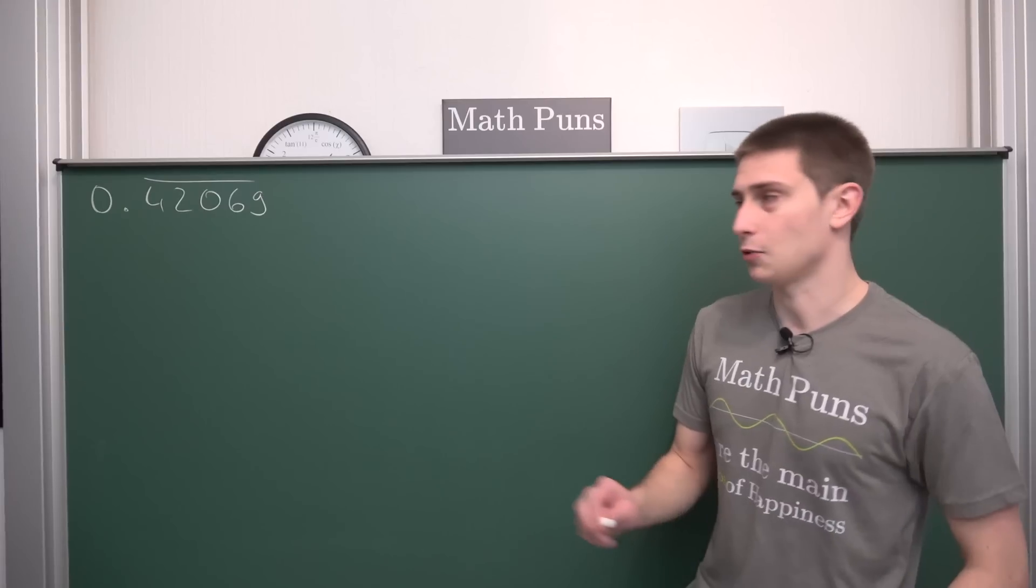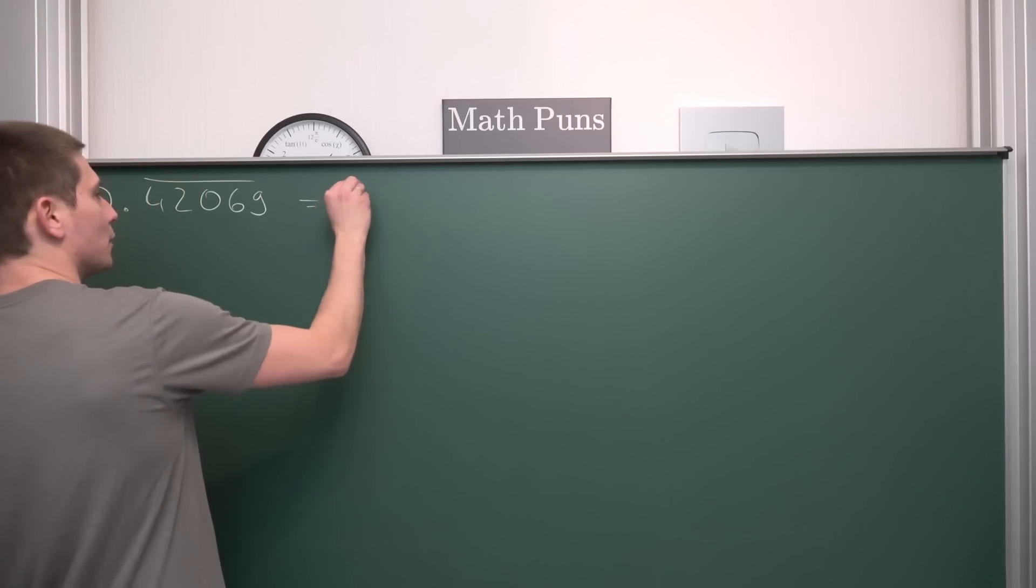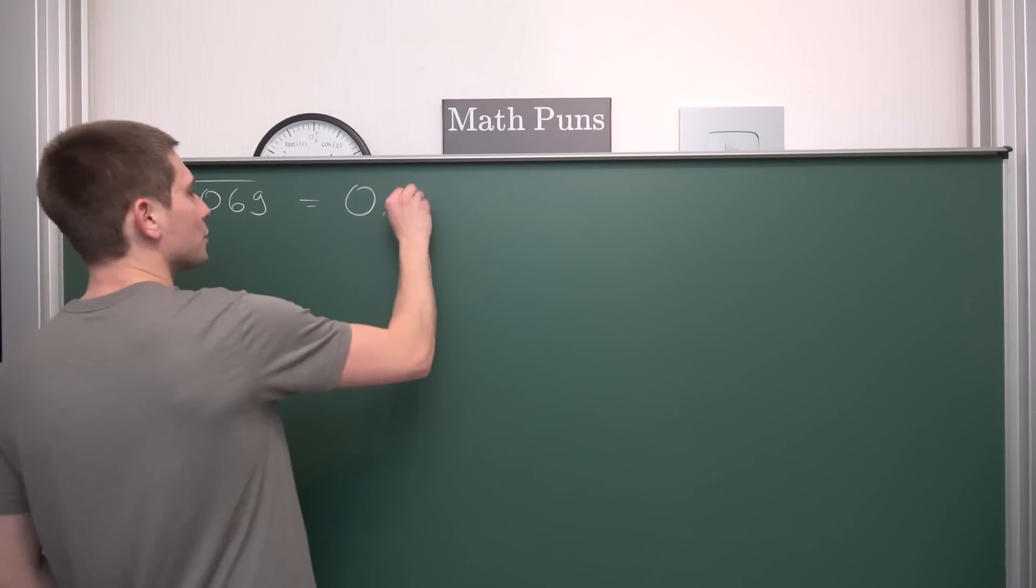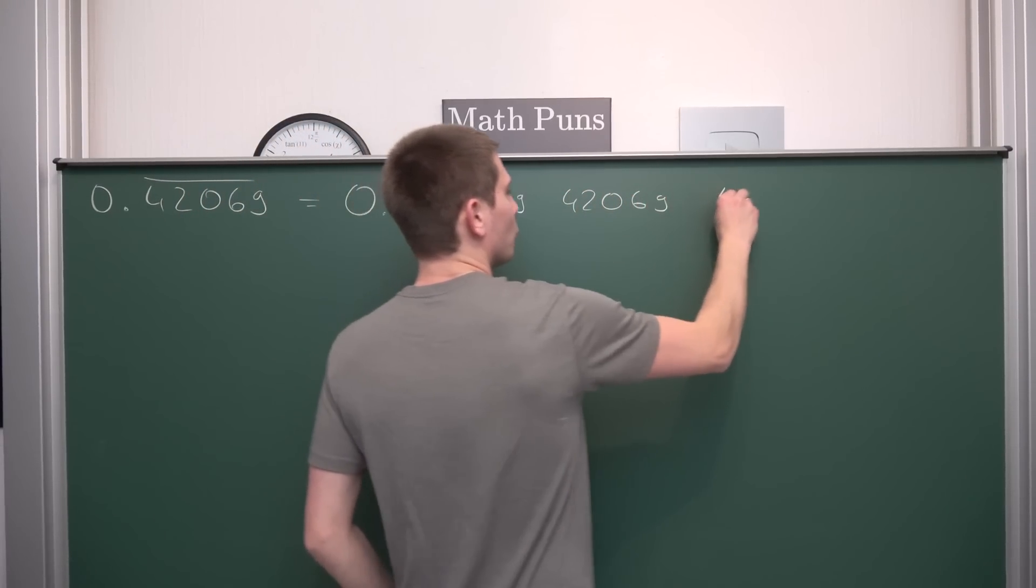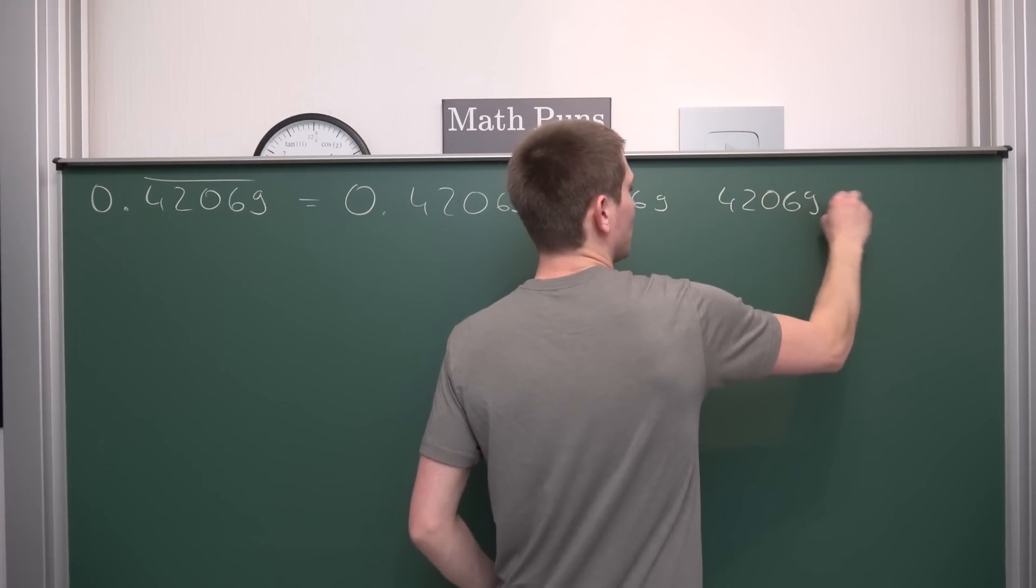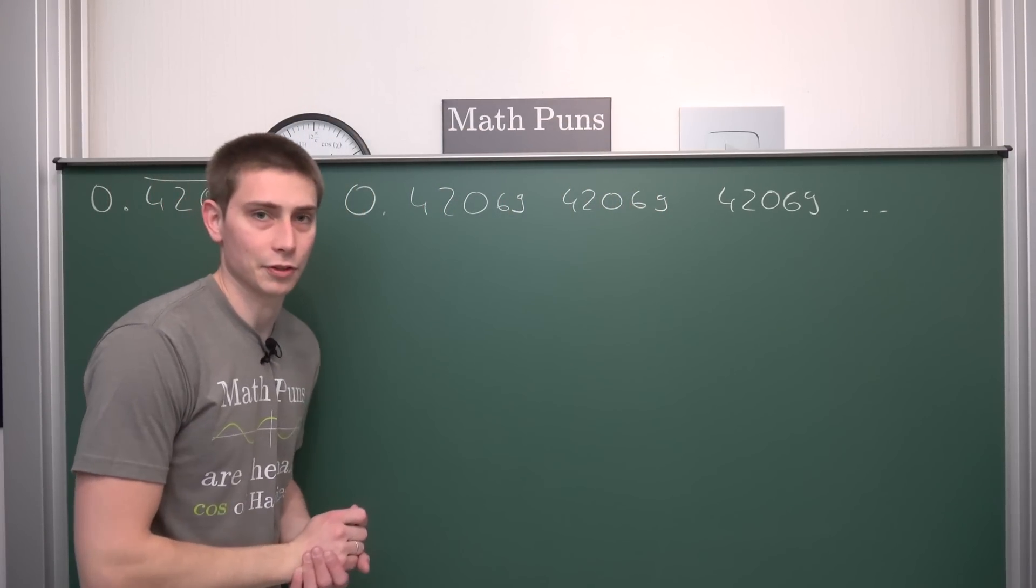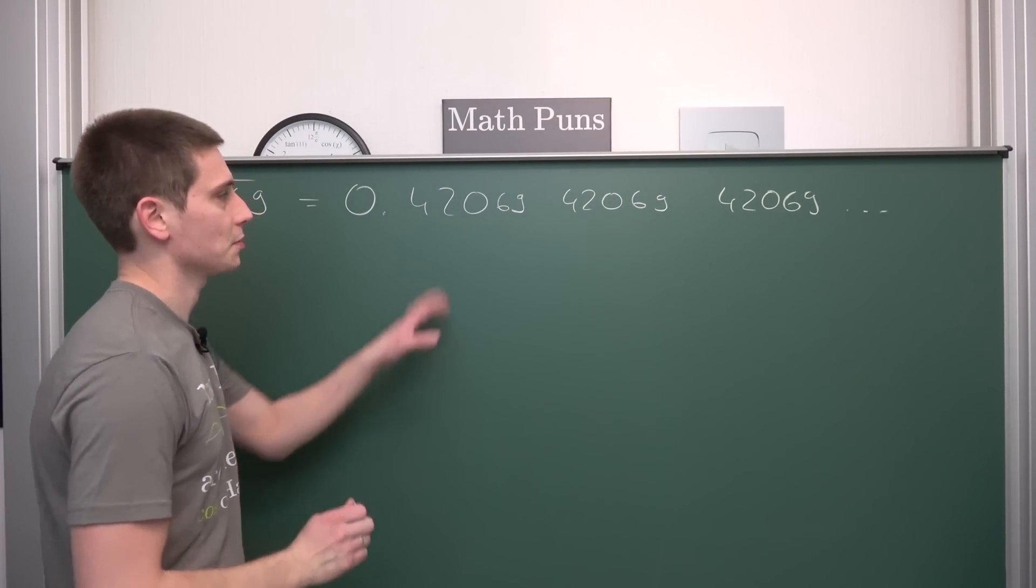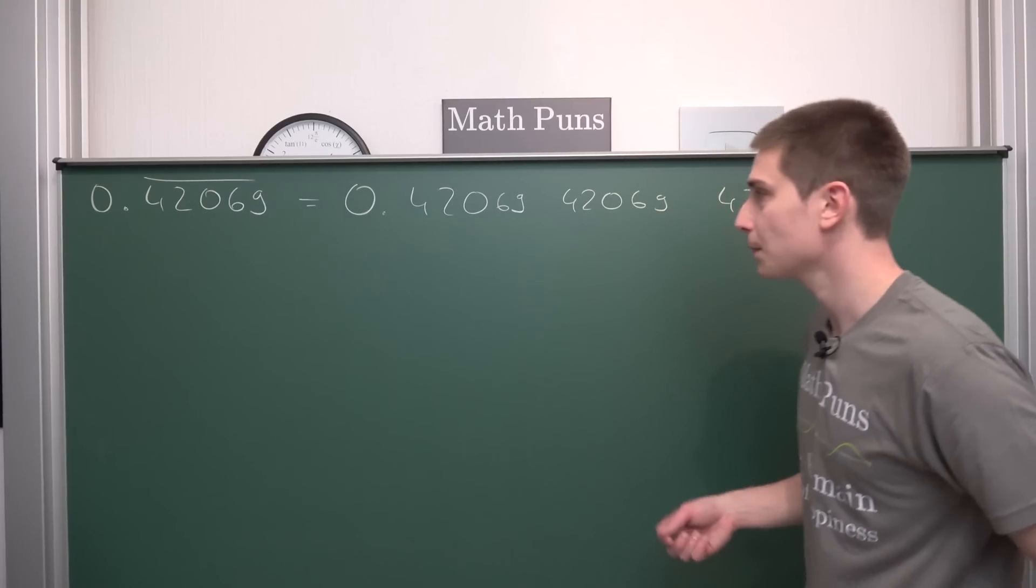The concrete example, let's say, is 0.42069, but the whole thing repeating. We want to see how we can express this as a fraction using calculus. Let me write it out a tiny little bit: 0.42069, 42069, 42069, and so on, up until infinity, repeating infinitely many times.